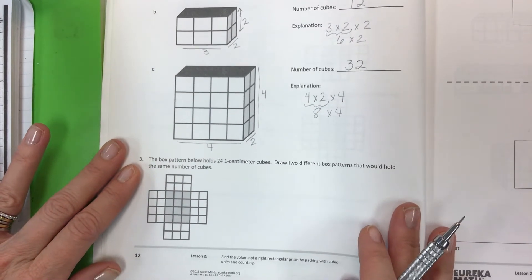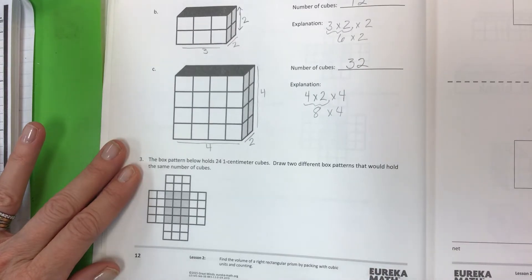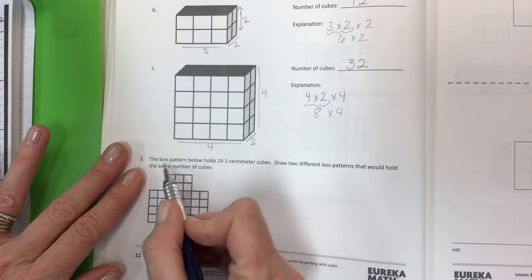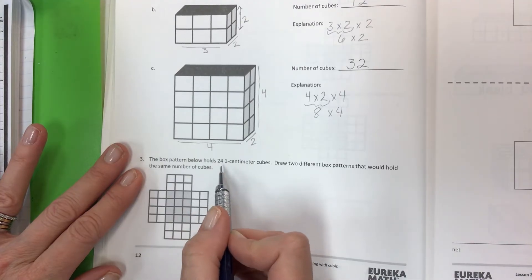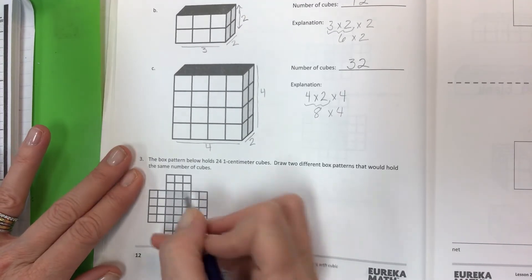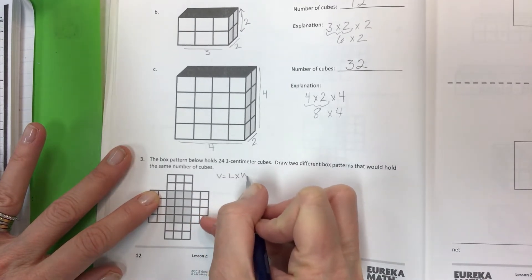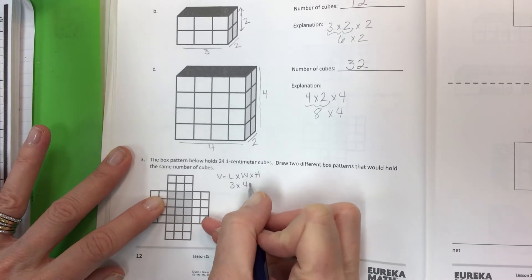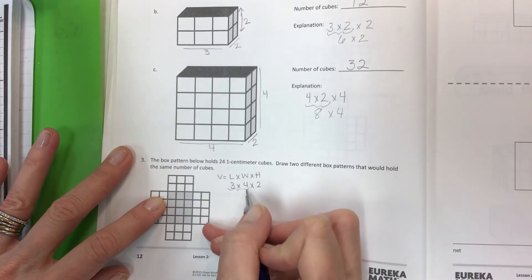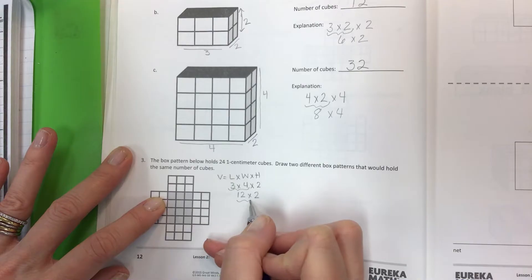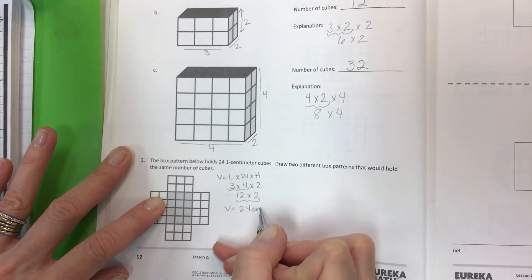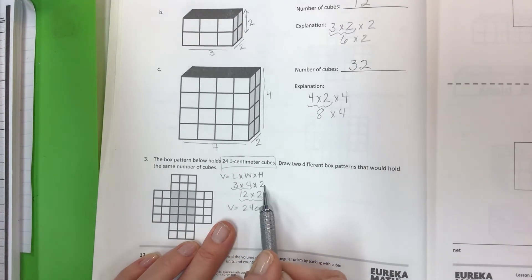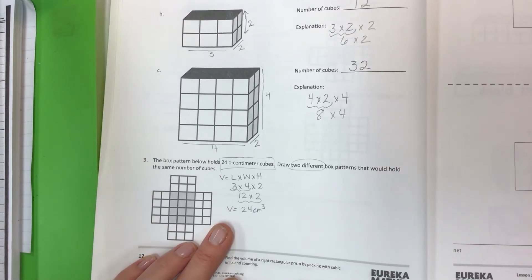The box pattern below holds 24 one-centimeter cubes. You can use your formula: volume equals length times width times height. Let's say it's a 3 by 4 by 2. If you were to solve that, you would get 24 centimeters cubed. We just did this—we're proving it with these dimensions.